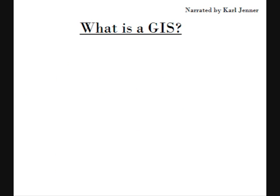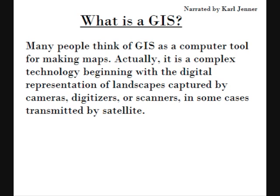So we begin by answering the question: what are geographic information systems? Many people think of a GIS as a computer tool for making maps. Actually, it is a complex technology beginning with the digital representation of landscapes captured by cameras, digitizers or scanners, in some cases transmitted by a satellite, and with the help of computer systems stored, checked, manipulated, enhanced, analyzed and displayed as data referenced to the Earth.